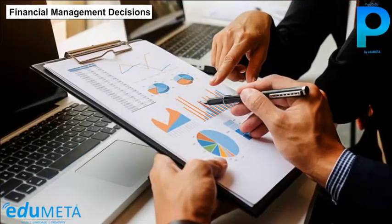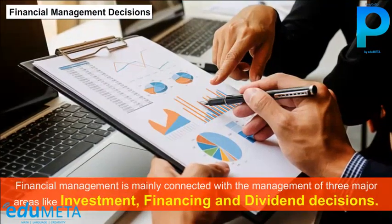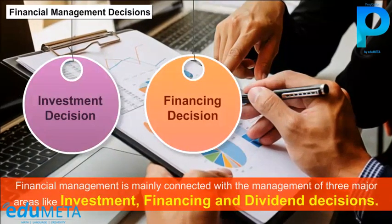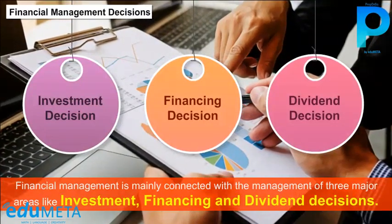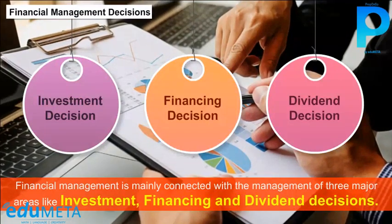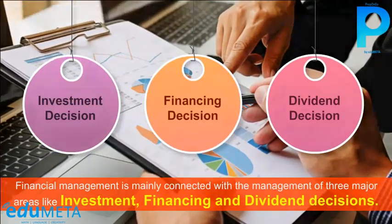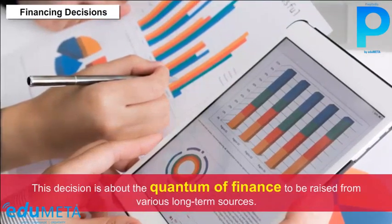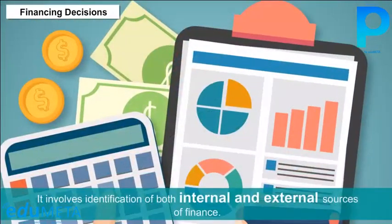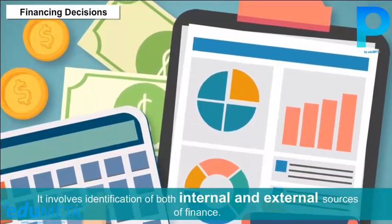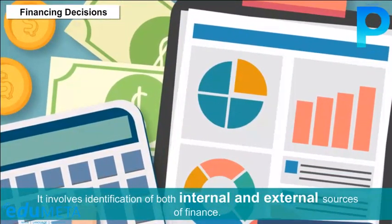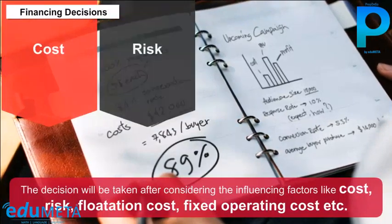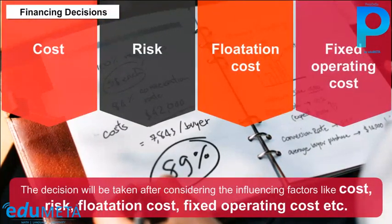Financial Management Decisions: Financial management is mainly connected with the management of three major areas — investment, financing, and dividend decisions. It analyses these three major areas and finds solutions to these problems. Financing decisions are about the quantum of finance to be raised from various long-term sources, involving identification of both internal and external sources of finance. The decision is taken after considering influencing factors like cost, risk, flotation cost, and fixed operating cost.